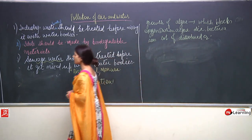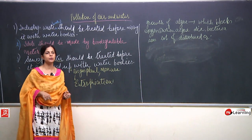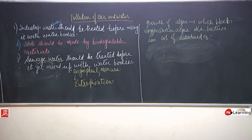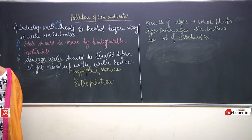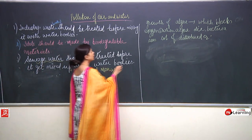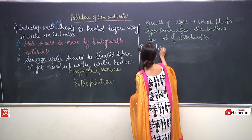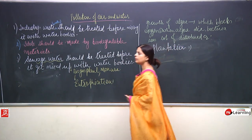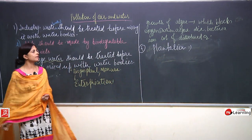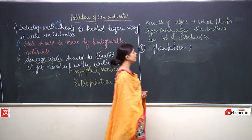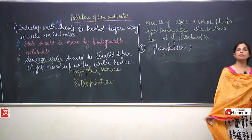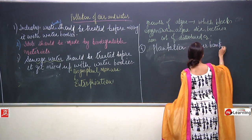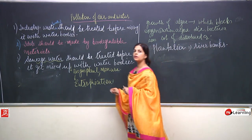This is the reason why sewage water should not be allowed to mix with water bodies. Now the next point: plantation should also be done on river banks. Why? Because plants hold the soil very properly and allow water to get absorbed into the soil, which also increases the level of underground water.